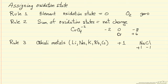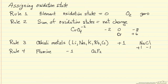The next rule says we assign an oxidation state to fluorine of minus 1 — and remember, this is in a compound. For example, in calcium fluoride, fluorine will be minus 1. Since there are 2 fluorines, calcium must be plus 2, so the sum of the oxidation states is 0.